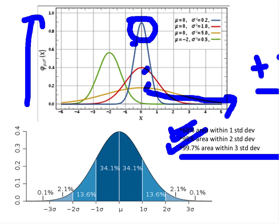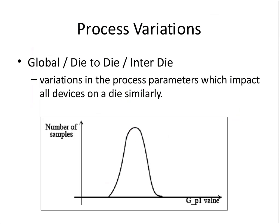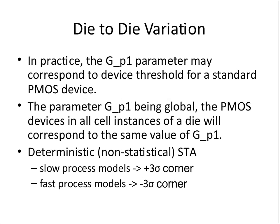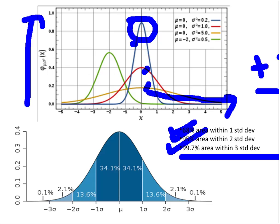Whatever corner is chosen for corner-based STA, we should try to choose a corner that covers up to three sigma. The slow corner is on the plus three sigma side and the fast corner is on the minus three sigma side. This is one parameter — channel length vs number of samples — but there are hundreds of parameters in practice. We get a Gaussian curve around a mean value and choose corners at plus and minus three sigma. The target is that yield should be more than 99 percent, though yield is never 100 percent.